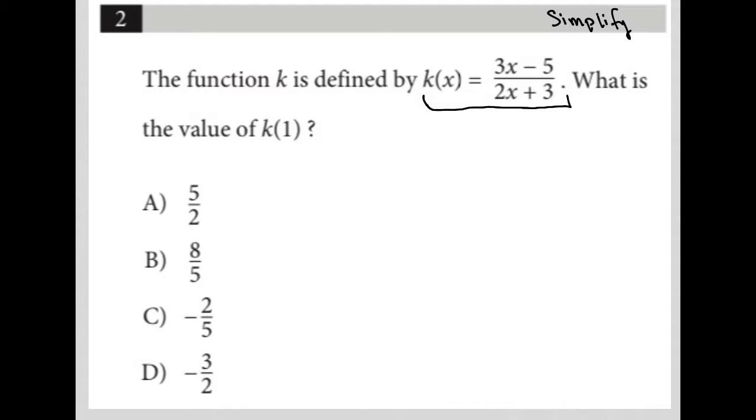So this question says the function k is defined by k of x equals 3x minus 5 over 2x plus 3. What is the value of k of 1?